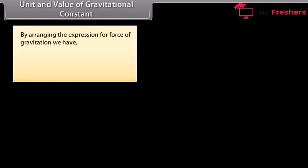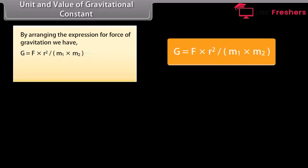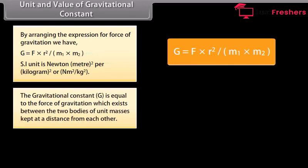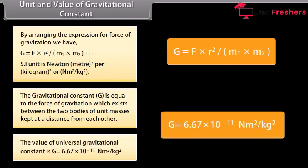Unit and value of gravitational constant: By arranging the expression for force of gravitation, G is equal to F times R squared upon M1 times M2. The SI unit is Newton meter squared per kilogram squared. The gravitational constant G is equal to the force of gravitation which exists between two bodies of unit masses kept at a unit distance from each other. The value of universal gravitational constant is G equal to 6.67 times 10 raised to the power minus 11 Newton meter squared per kg squared.